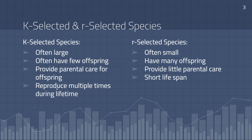We also discussed K-selected and R-selected species. K-selected species are often large. They are species that have few offspring — they might reproduce several times during their lifetime, but each time they reproduce, they're typically only having a few offspring. However, these species do provide parental care for their offspring, spending quite a bit of time and energy caring for their young and helping them learn how to function within the ecosystem.